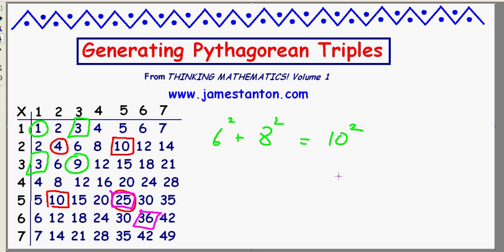All right. Add them. 36 plus 25 is 61. And subtract them. 36 take away 25 is 11. And add the corresponding side numbers. In this case, it's 30 and 30 is 60. I claim 60 squared plus 11 squared is 61 squared.